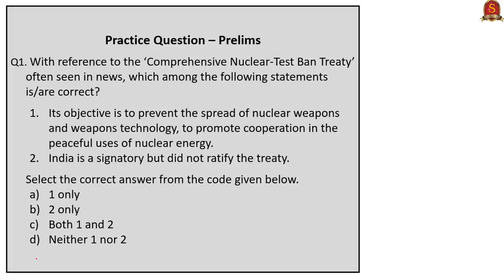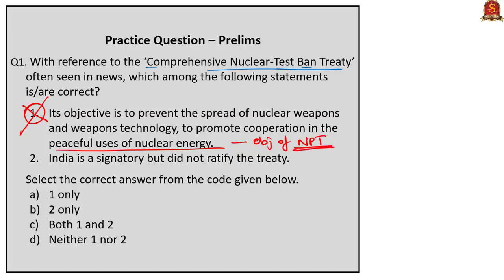Practice Question 1: With reference to CTBT, two statements are given. Statement 1 says the objective of CTBT is to prevent the spread of nuclear weapons and promote cooperation in peaceful uses of nuclear energy — this is incorrect; that is the objective of the NPT. The objective of CTBT is banning all nuclear explosions everywhere by everyone. Statement 2 says India is a signatory but did not ratify — this is also wrong; India has not signed the treaty at all. Therefore the correct answer is option D: neither statement 1 nor 2.